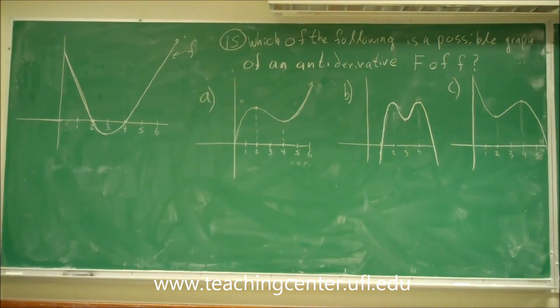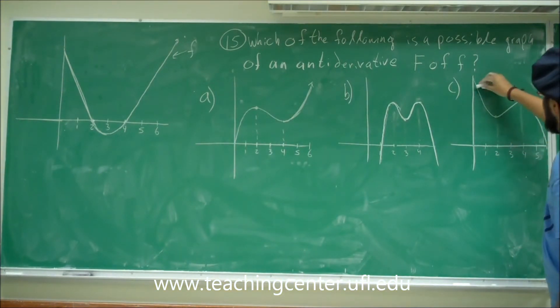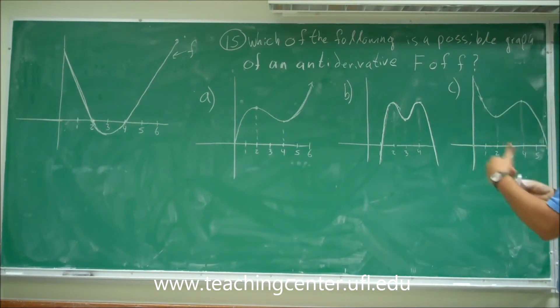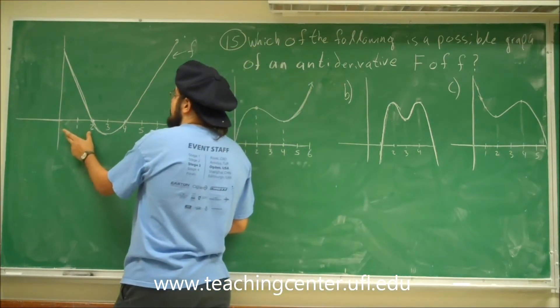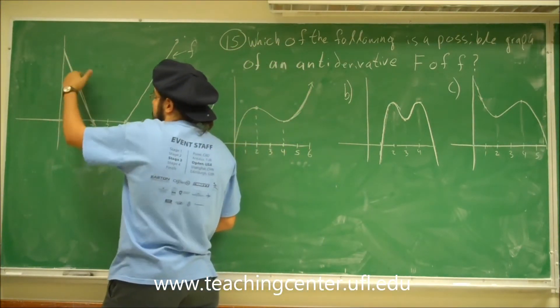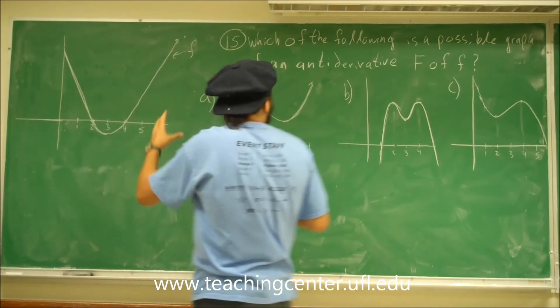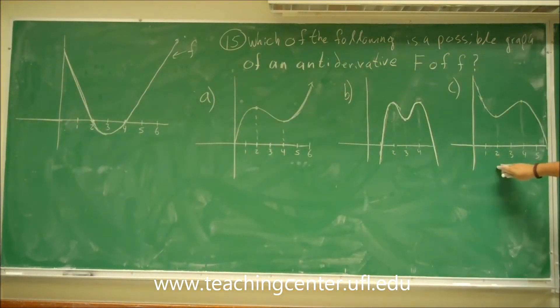So I'm going to start off with c. Let's look at c. Between one and two, this has negative slopes, right? So negative values. However, between one and two here, this has positive values, because they're on the positive y-axis, they're positive. So it doesn't make any sense that c is the right choice, right off the bat. So I can go ahead and just cancel that out.